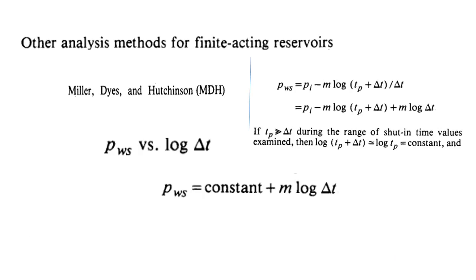The concept of Cobb and Smith was based on the MDH approach (Miller, Dyes, and Hutchinson). They suggested that instead of plotting Horner's plot, which was Pws versus log of (tp + Δt)/Δt, we plot Pws versus log Δt. In that case, we assume that tp is sufficiently larger than Δt, meaning the well is draining for a longer period and has reached pseudo steady condition. So log(tp + Δt) will reduce down to tp, and that is constant.